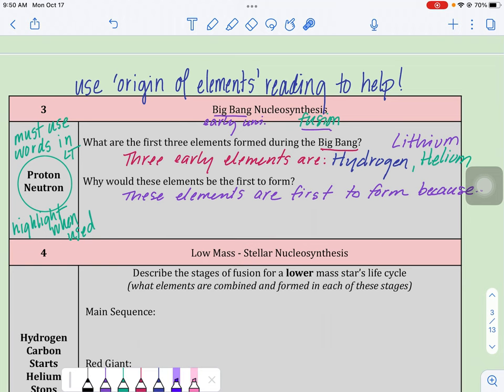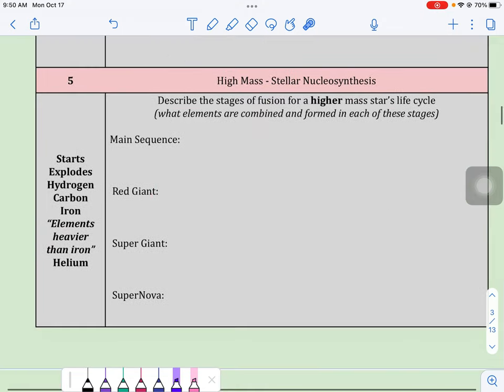Having those elements then allows us to have enough stuff out there in the universe to create our stellar nucleosynthesis. The fusion within stars, both low mass and high mass. And that's coming up with our learning target four and five.